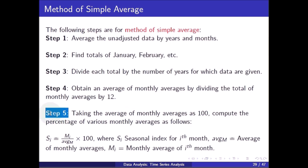In step 5, taking the average of monthly averages as 100, compute the percentage of various months' monthly averages. The formula is: SI = (MI / AAVG) × 100, where SI is the seasonal index for the ith month, AAVG is the average of monthly averages, and MI is the monthly average of the ith month.